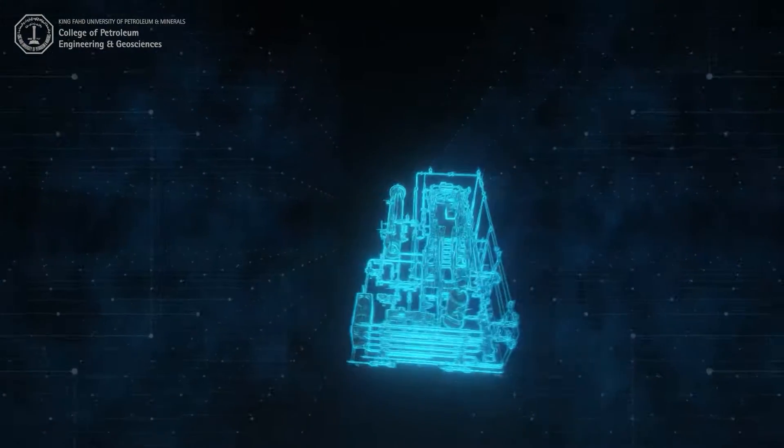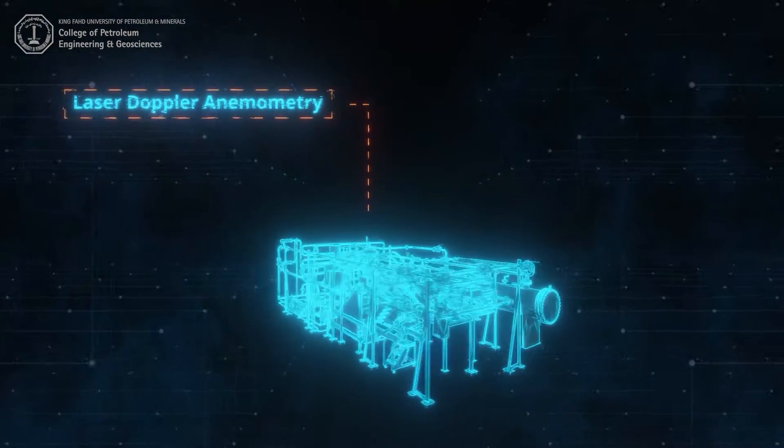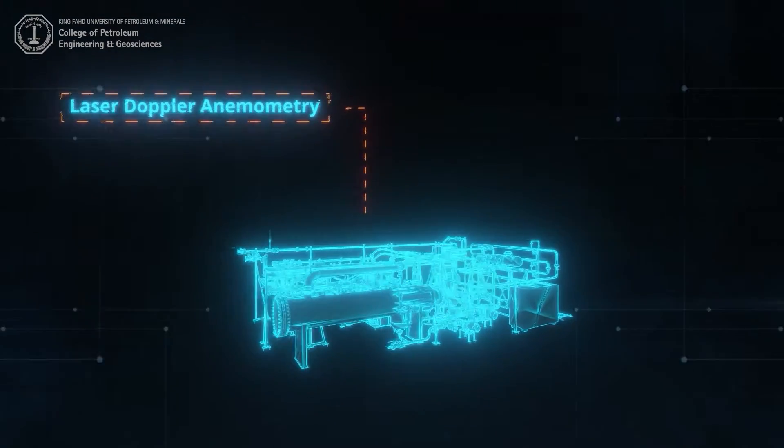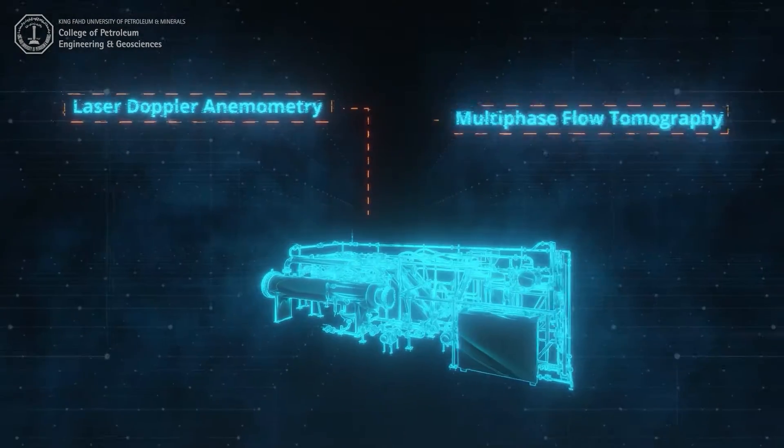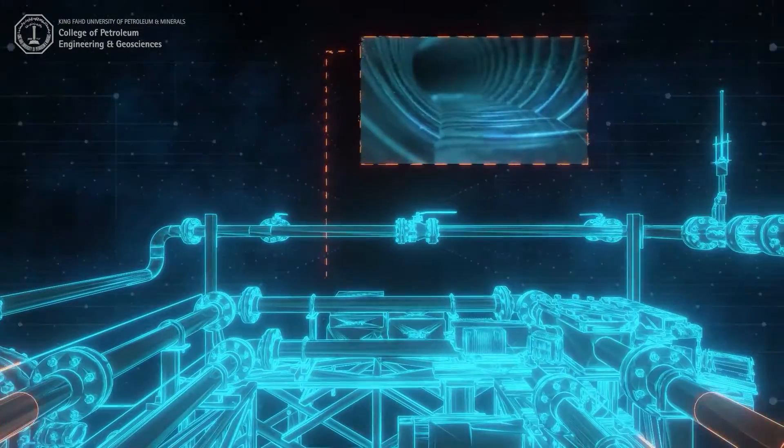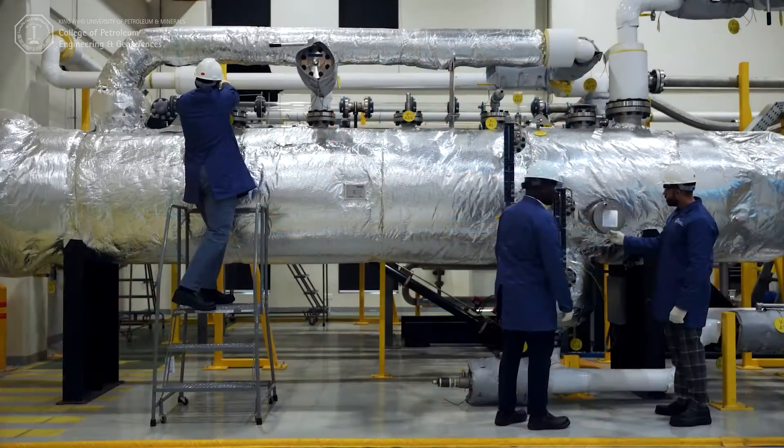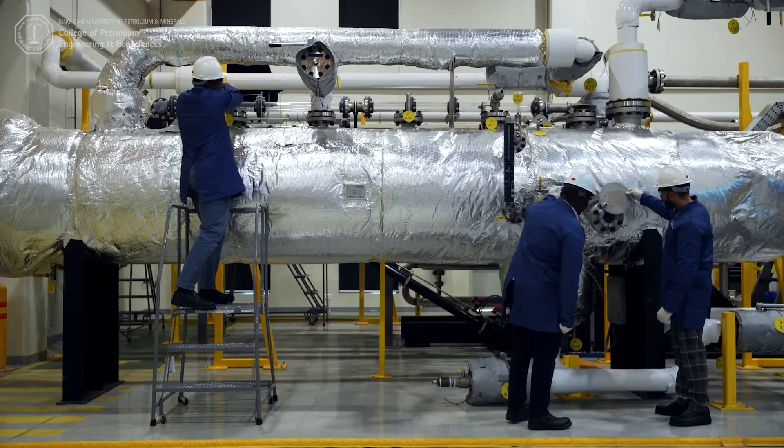Such studies are enabled by the Flow Loop's advanced instrumentation, with laser Doppler anemometry, or LDA, ensuring high-precision flow velocity measurements, and multi-phase flow tomography allowing visualization of oil, gas, and water flow inside pipes, and more.